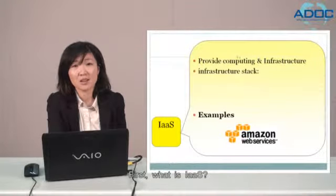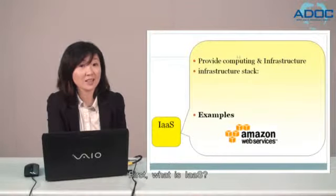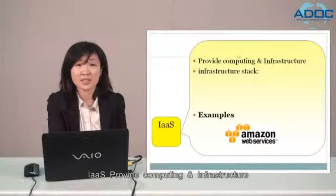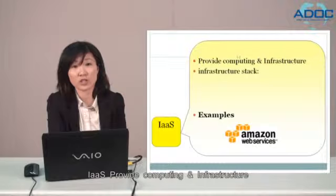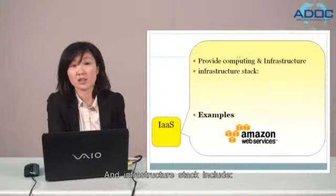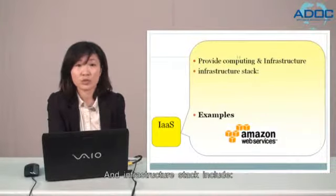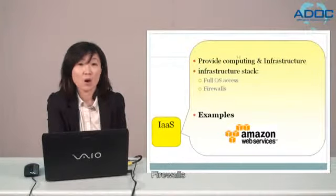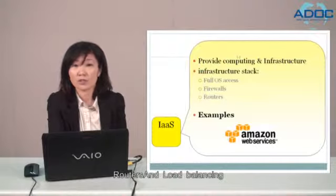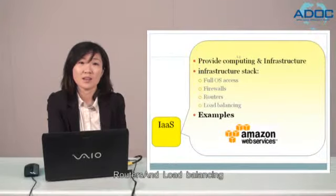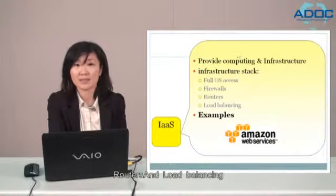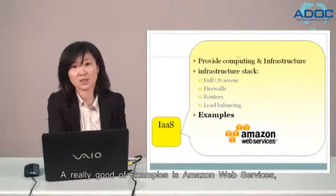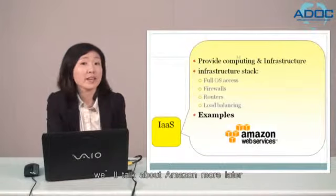First, what is IaaS? IaaS provides computing and infrastructure, and the infrastructure stack includes full OS access, firewalls, routers, and load balancing. A very good example is Amazon Web Services. We will talk about Amazon more later.